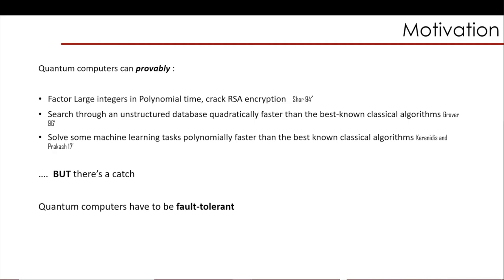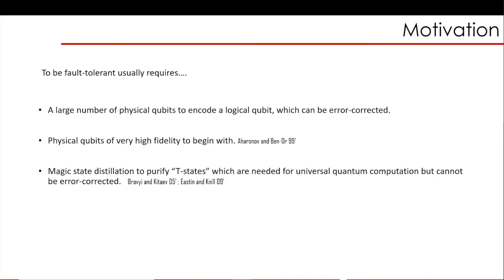But of course, there's a catch which is sometimes failed to be mentioned - these quantum computers need to be fault tolerant. This means you actually need a large number of qubits to encode what is called a logical qubit, which is capable of error correction. Errors happen in quantum devices as they do in classical devices, and we need to find a way to correct them. Otherwise, your computation would be corrupted and meaningless. And these qubits need to be very good quality to begin with. So you need a large number and they need to be very good quality.